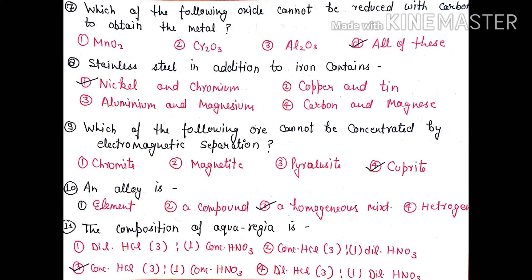Question 10: An alloy is - element, a compound, a homogeneous mixture, and a heterogeneous mixture. The right option is option 3, a homogeneous mixture.